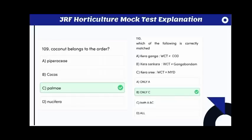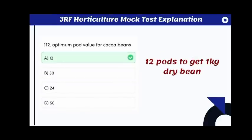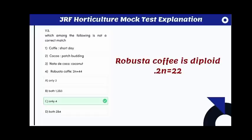Which of the following is correctly matched for coconut varieties? Kera Ganga: West Coast Tall × Choughat Orange Dwarf; Kera Shankar: West Coast Tall × Gangabondam; Kera Shri: West Coast Tall × Malayan Yellow Dwarf. The correct answer is only C is correctly matched. Abnormal leaf fall disease observed in rubber is due to Phytophthora meadii.